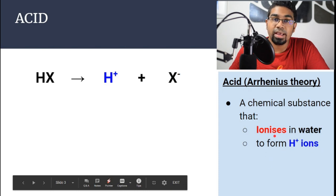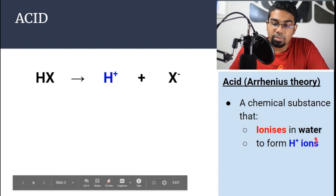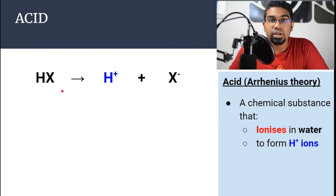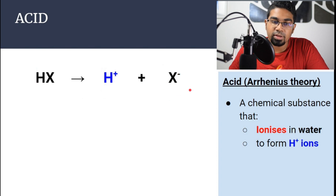When we add an acid to water, it ionizes or dissociates, and H+ ions are formed. HX is the acid. When we put it into water, H+ ions are formed, and then we have an anion as well.